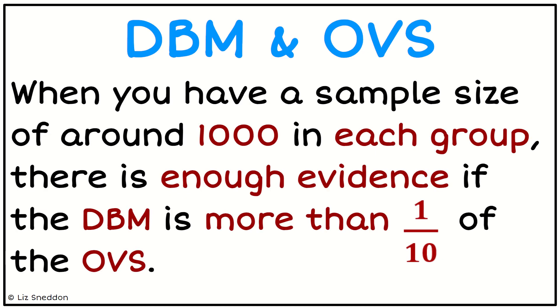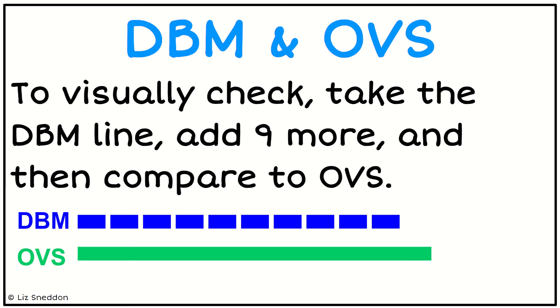If I have a sample size of around a thousand in each group, then we will use the fraction one-tenth to find if there's enough evidence. We're looking to see is the DBM more than one-tenth of the OVS. I've taken that DBM and made nine copies of it so there's 10 copies in total, and I want to compare that to the OVS to see which one's bigger.